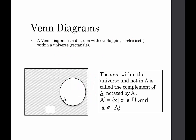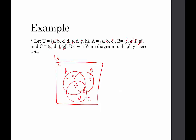A Venn diagram is a diagram with overlapping circles or sets within a universe or rectangle. Now, we've talked about elements that belong in regions, but there are also elements that don't belong to certain sets. The area within the universe and not in A is called the complement of A. We write it as A prime, read as A complement. So A complement is any element in the universe that's not in set A. For example, H would not be in set A, so we would say that H is in the complement of A.